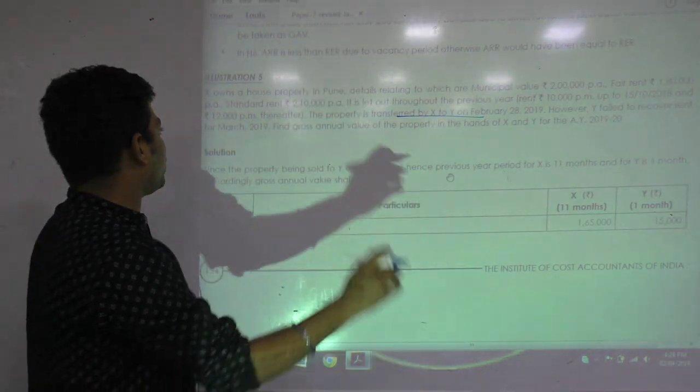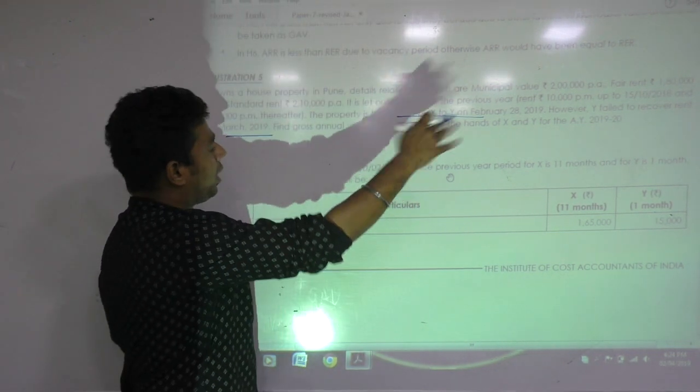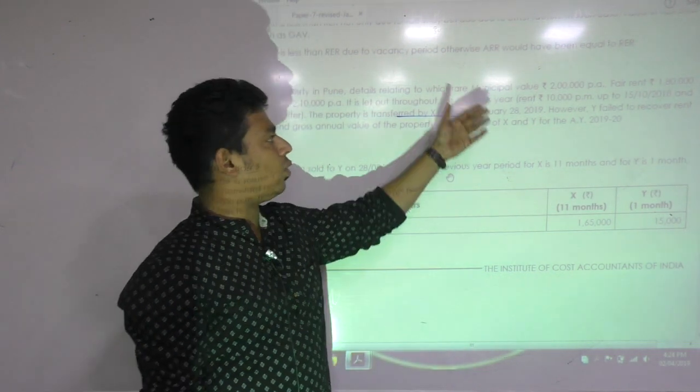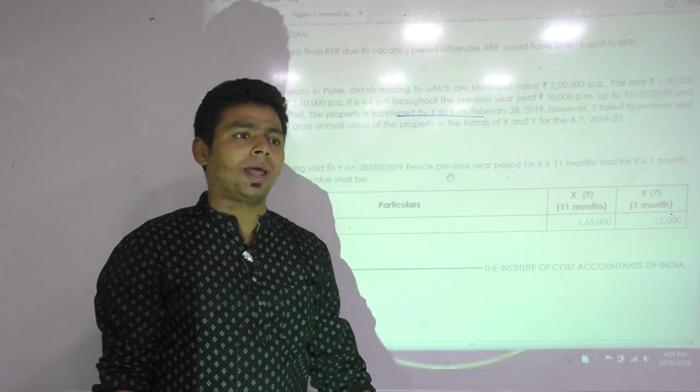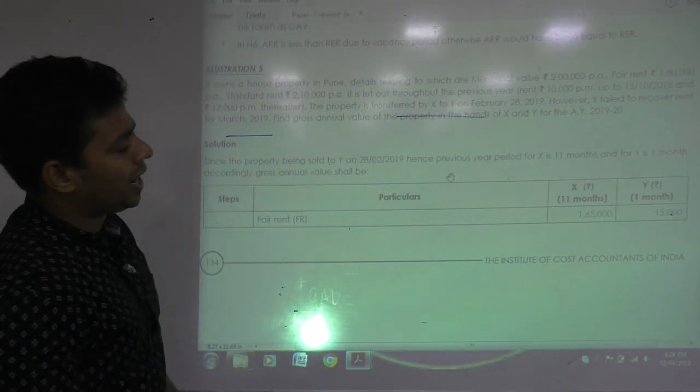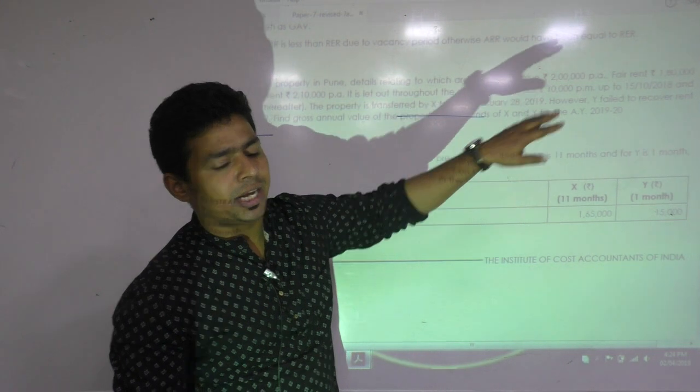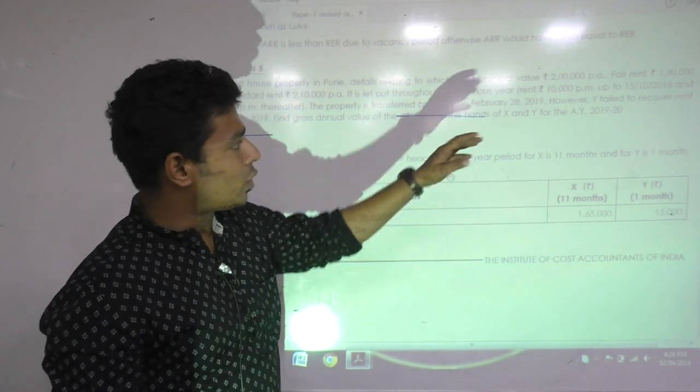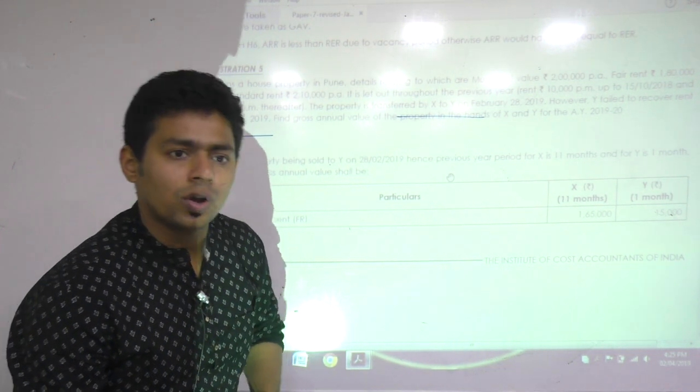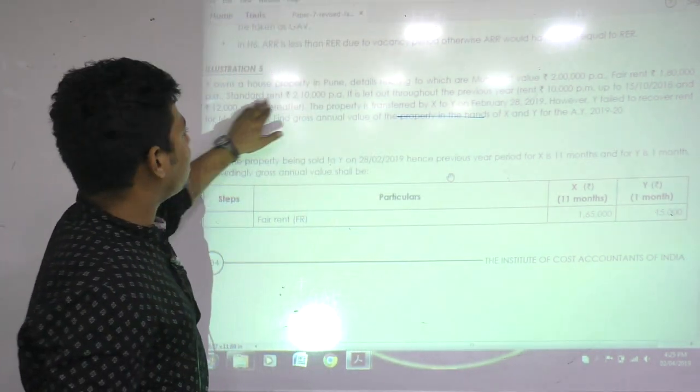However, Mr. Y failed to recover rent of March 2019, so that is unrealized rent. They have given proportionate rent and unrealized rent. Let's ignore Y and focus on X. Will you write 2 lakh rupees in column? No. We have to write 2 lakh multiply by 11 divided by 12. How much is that? 1 lakh 83,333. Fair rent is 1 lakh 80 for 11 months - that's 1 lakh 65. So whichever is higher is 1 lakh 83,333.